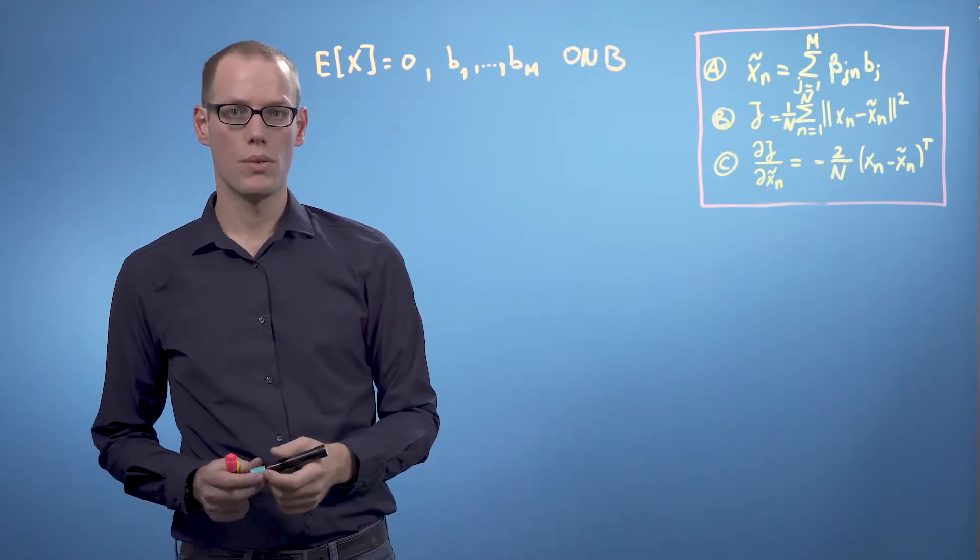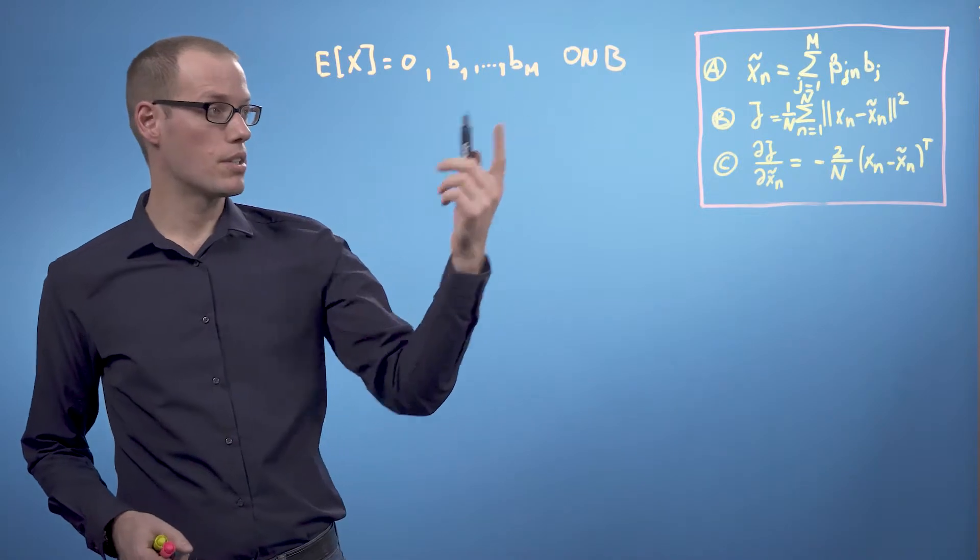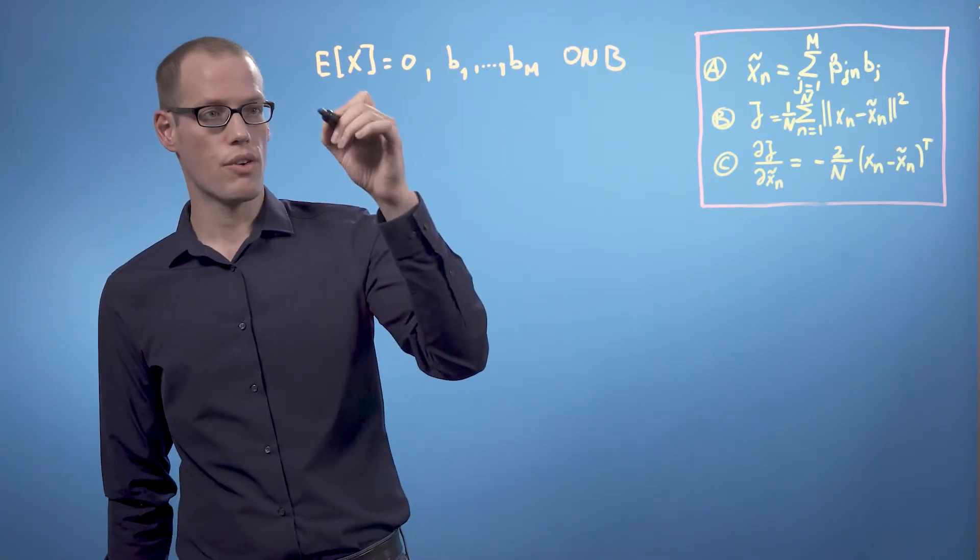And now we are ready to compute the partial derivative of j with respect to the beta in parameters as follows.